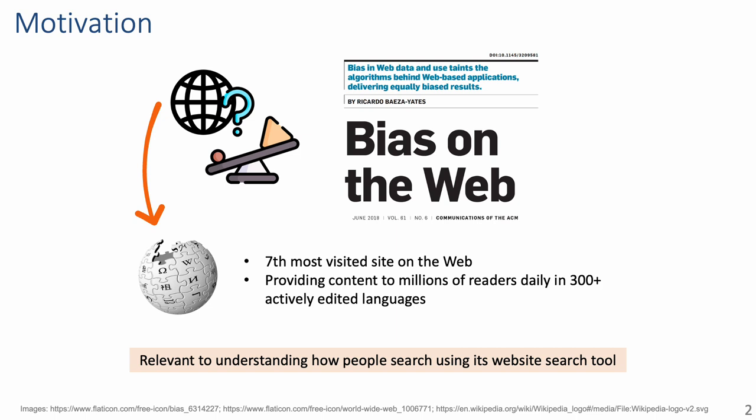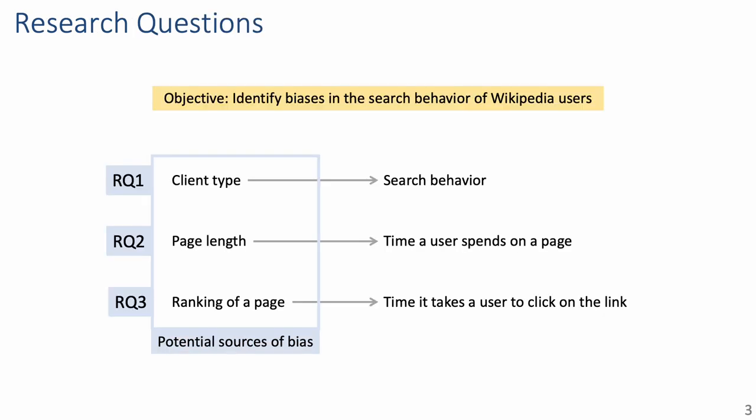Due to this, we believe it is indeed relevant to understand how its users browse the content of the site, in particular using its website search tool. The high-level objective of the work was to identify elements affecting or biasing the search behavior of Wikipedia users. For this, based on Wikipedia's server logs, we generated datasets containing millions of search sessions, to first characterize its website search, and then compare it to generic web search. In this work, we focused on the potential sources of bias shown inside the blue rectangle on the slide, which are the type of device — namely whether it is a desktop or mobile device — the page length of the articles, as well as the ranking position of the pages.